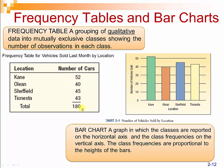The bar chart is a graph in which classes are reported on the horizontal axis and the class frequencies on the vertical axis. The class frequencies are proportional to the heights of the bars. So if you see in our frequency table here, what we've done is taken that and turned it into a bar chart by showing Cain's 52 cars in the first column and Olean's 40 cars in the second column.